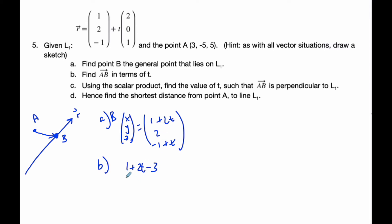1+2t minus 3, then my second component: B minus A is -5, and finally -1+t (my z value) subtract 5. If I simplify this, I know that vector AB is equal to -2+2t, 7, and -6+t. This is vector AB.